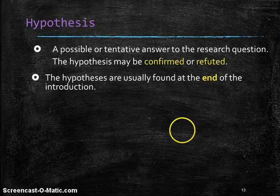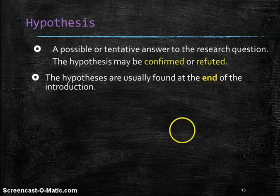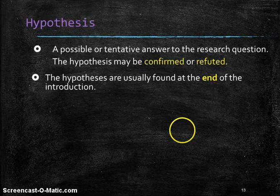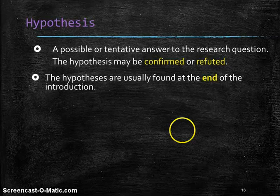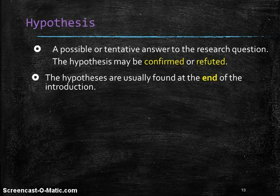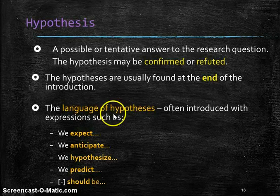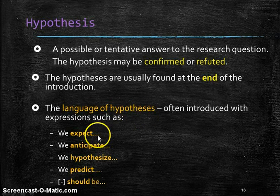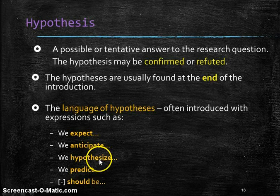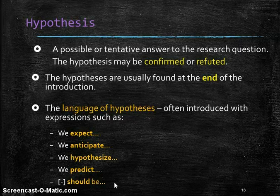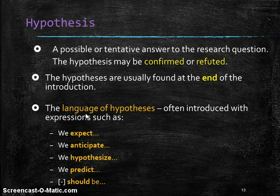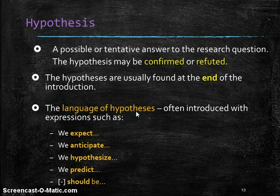I want to talk a little bit about the hypotheses. Basically, this is a possible or tentative answer to the research question. And it's basically confirmed or refuted. It's either proved or not proved. They often appear at the end of the introduction. They don't always appear as the hypotheses are, but we have a special language of hypotheses, such as we expect or we anticipate. Sometimes we hypothesize, we predict or should be. These are clues. They are language clues that show us that we're talking about the hypotheses and we need to pay attention to them. If you see them, highlight.